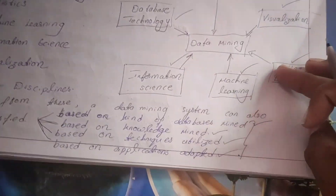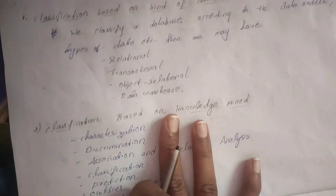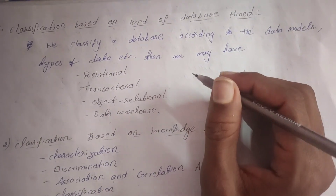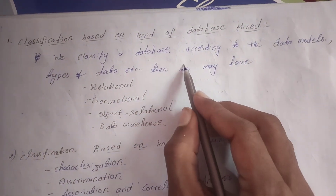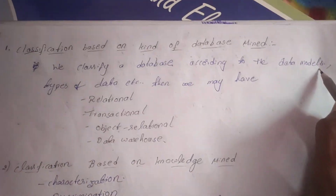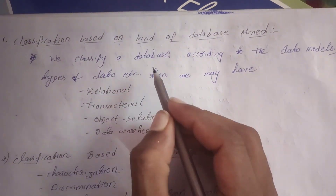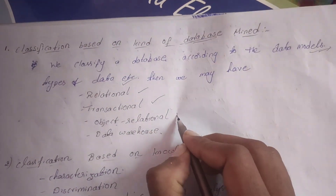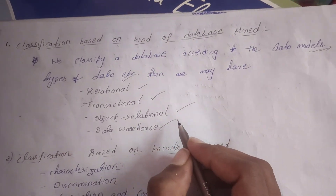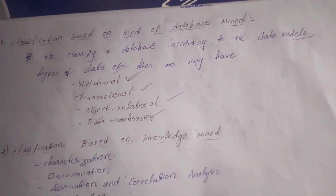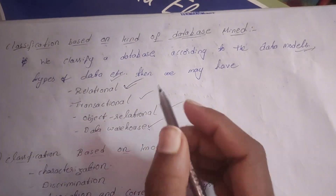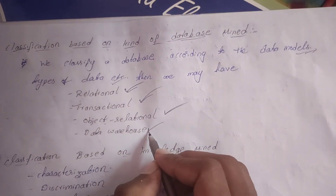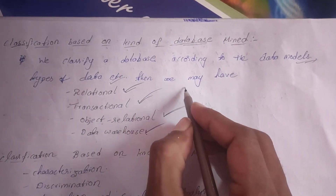The first classification is based on kind of database mined. Here we can classify databases according to data models and types of data. These include relational, transactional, object-oriented, object-relational, and data warehouse databases. Relational means DBMS in the form of a relational model.